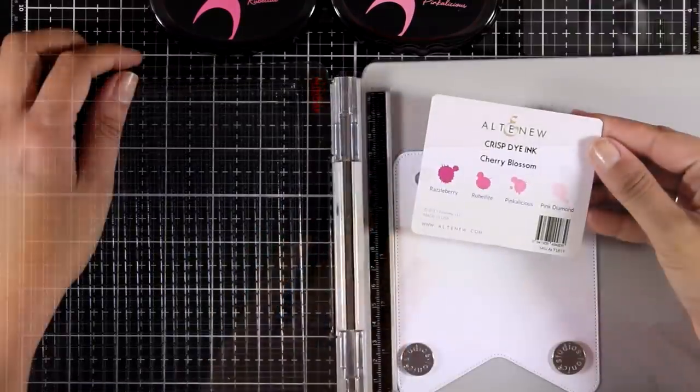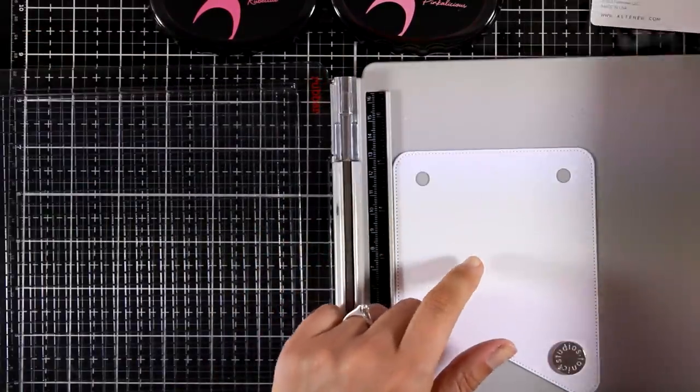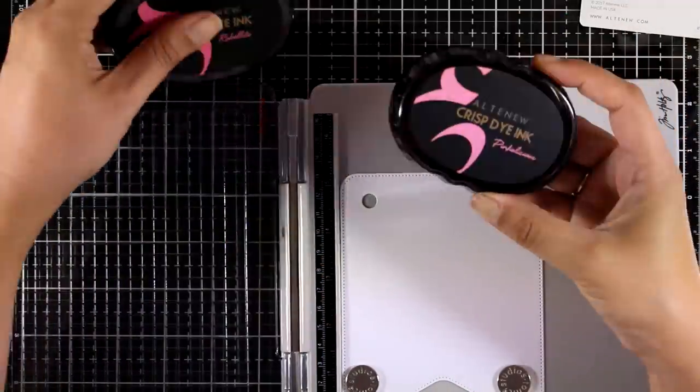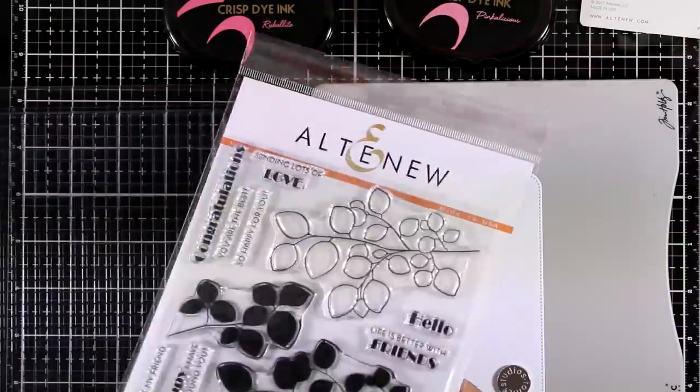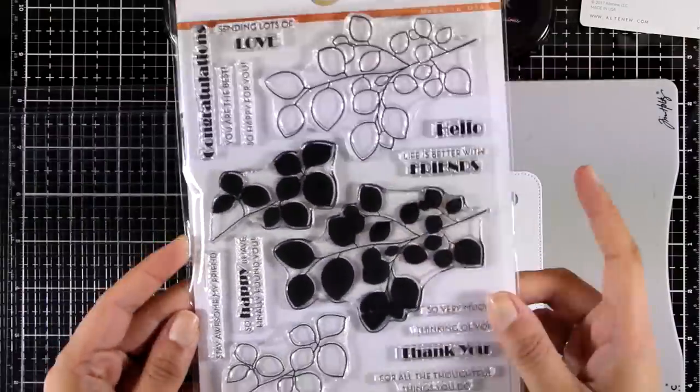For doing all my stamping, I'll be using inks from this oval set which is called Cherry Blossom. I will be using a new stamp set which is called Leaf Canopy.